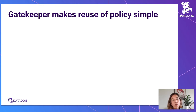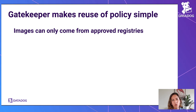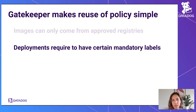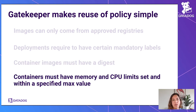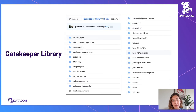A great way to start with Gatekeeper policy as code is that many of these rules are very common across Kubernetes users. You probably want rules about images only coming from an approved registry, mandatory labels in your deployments, images needing to contain a digest, CPU and memory limits set for all containers. All these things are fairly common, and this is where the Gatekeeper community library is exciting — it has ready-to-use constraint templates you can reuse to create your own rules for your cluster.